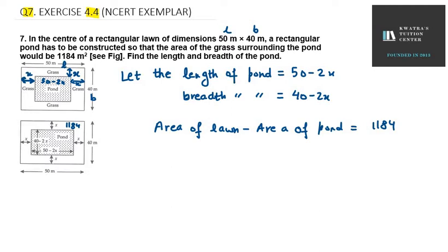Lawn का area क्या होगा? 50 and 40. So 50 and 40 minus area of pond. Pond की length कितनी है 50 minus 2x, और breadth कितनी है 40 minus 2x, equals 1184 meter square. Now 50 into 40 is 2000, 2000 minus 50 into 40, minus 2000 again.